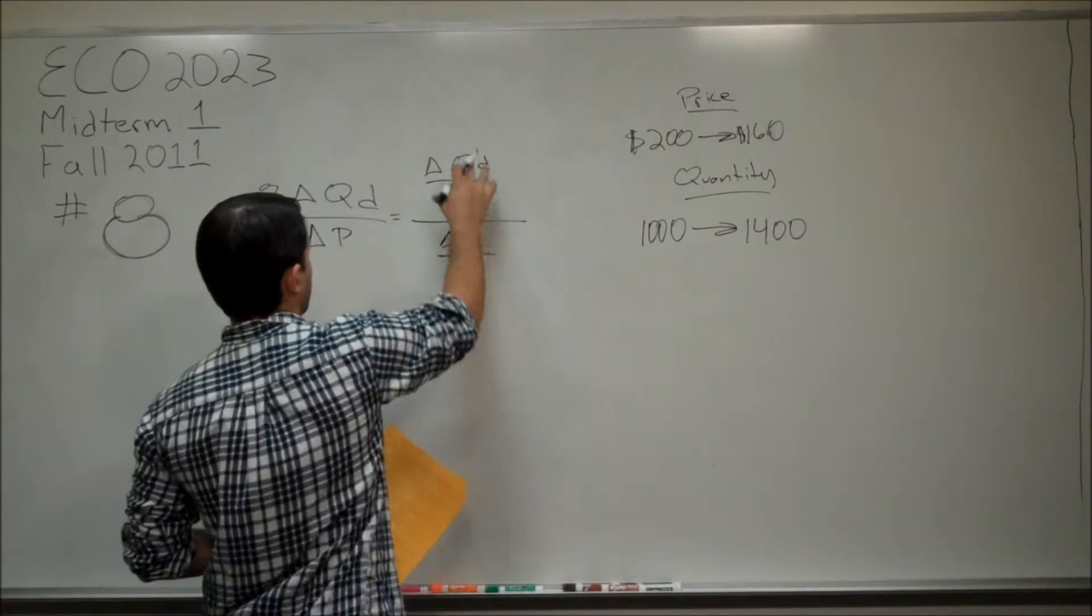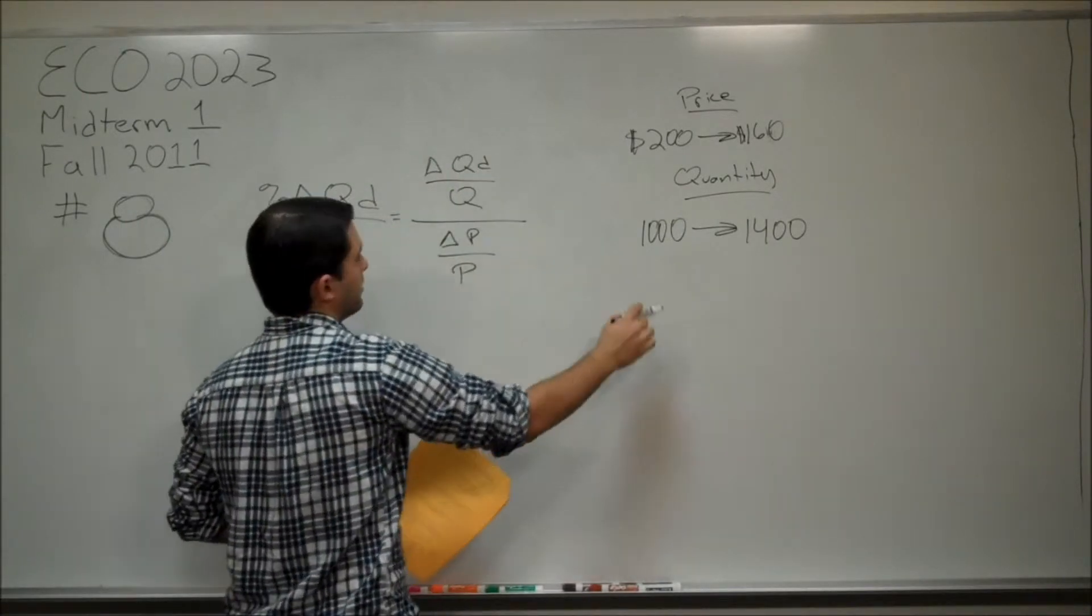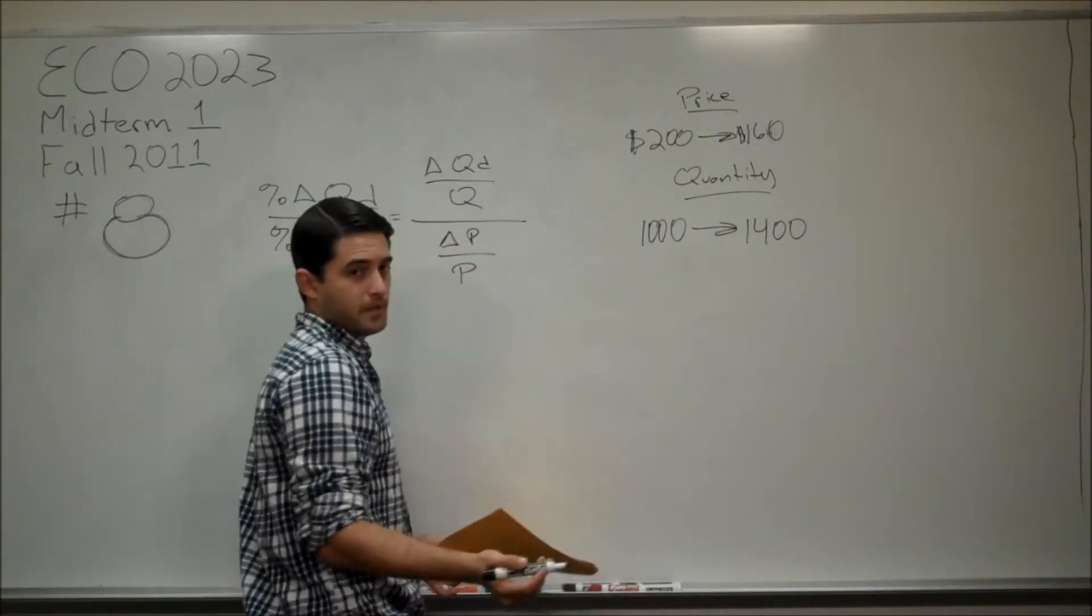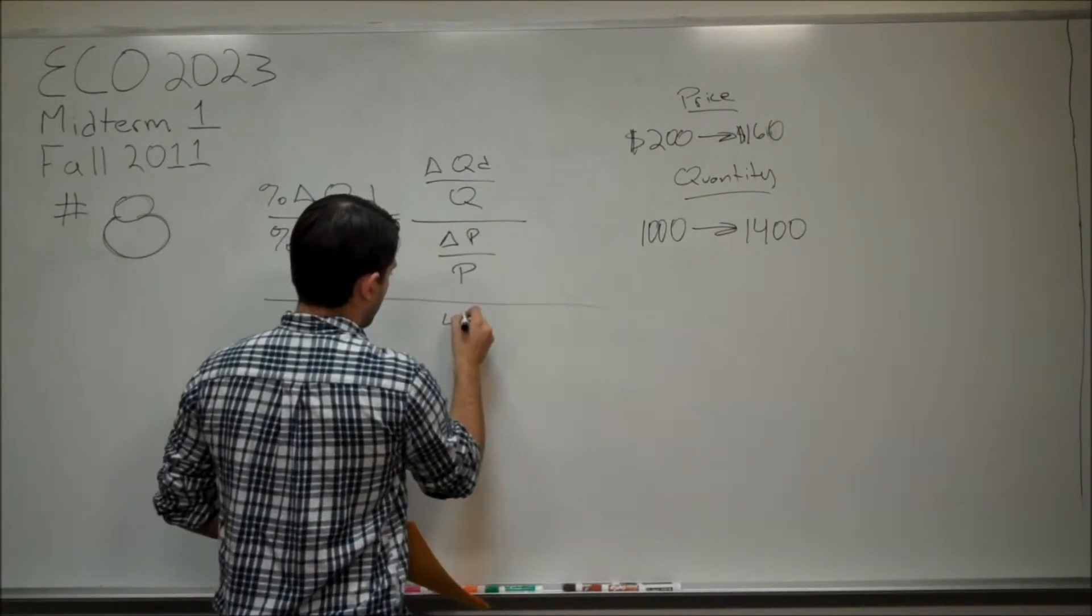So, the first part of the formula is the change in quantity demanded. 1,000 to 1,400, that's 400. So, we can write that as 400.